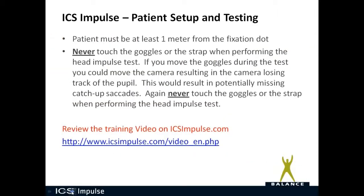Now let's talk about patient setup and testing. The patient must be at least one meter from the fixation dot. Having a very close target activates convergence — the eyes have to cross in order to look at the dot. Activation of the convergence system may interfere with the vestibular ocular reflex. In addition, a close target adds a linear component where the eyes move sideways relative to the dot, an effect that becomes smaller with increasing distance. That's why it is recommended the patient be at least one meter away from the fixation dot.